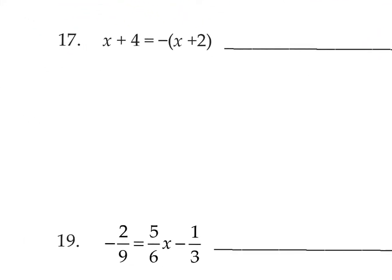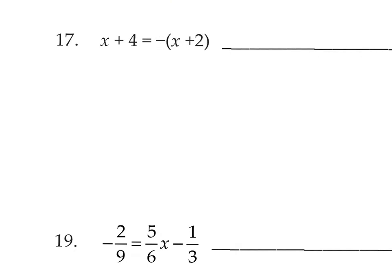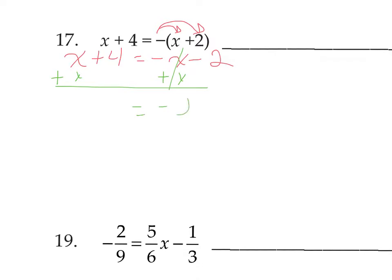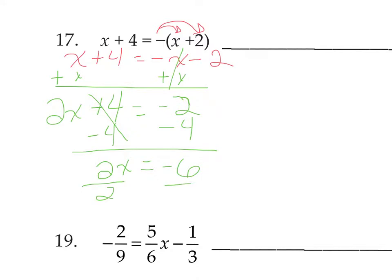Let's look at number 17. We need to simplify before solving. We have x plus 4 equals negative 1 times x, negative 1 times 2 — so negative x minus 2. We have x's on both sides, so add x to both sides. That cancels on the right, leaving negative 2. x plus x is 2x plus 4. Subtract 4 to isolate x: 2x equals negative 6. Divide by the coefficient: x equals negative 3.